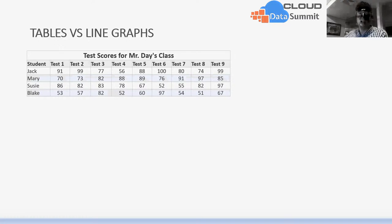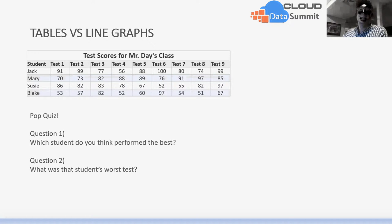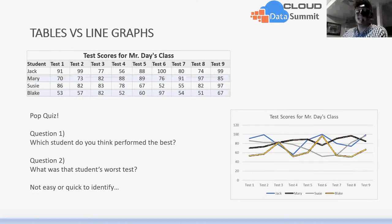However, tables are not always the best use for data visualization — this is where line graphs come in. If I asked you which student is doing better or worse than they started and how long does it take to figure that out, could you answer it quickly? With a pop quiz: which student performed the best based on this data set? And what was that student's worst test score? There's an easier and quicker way than asking someone to scan 40 data points — and that's using a line graph.